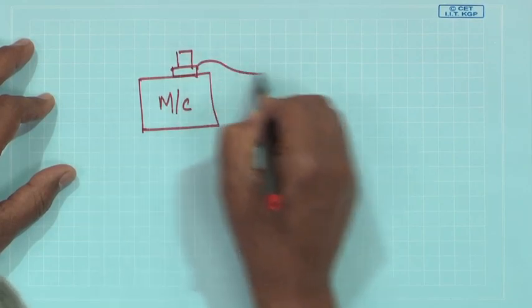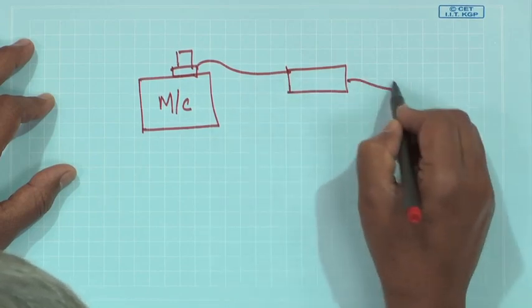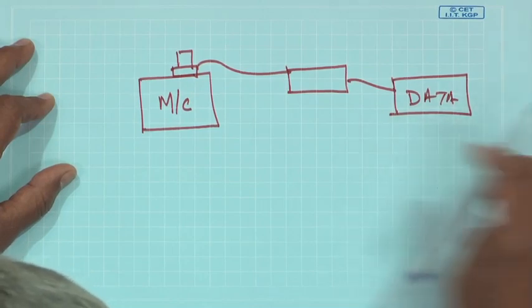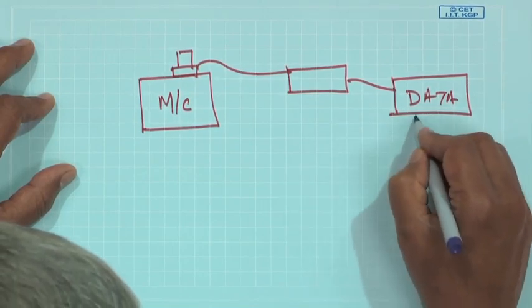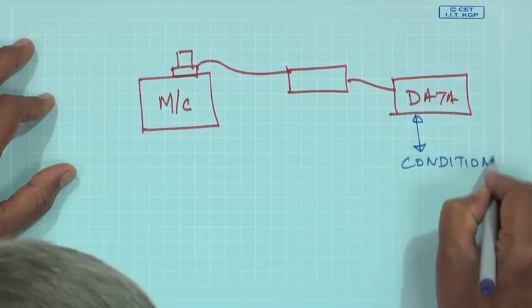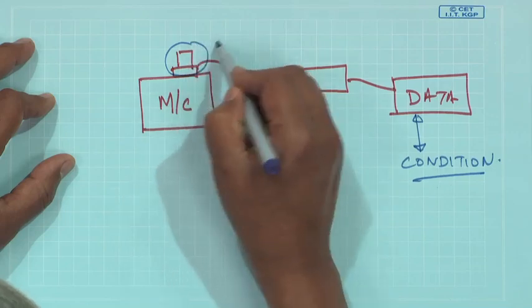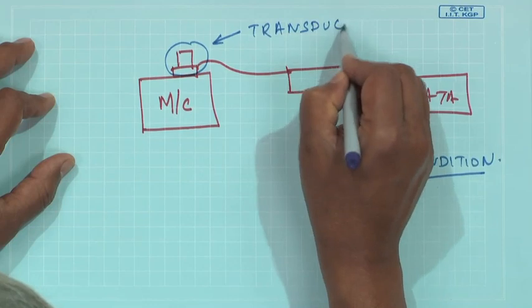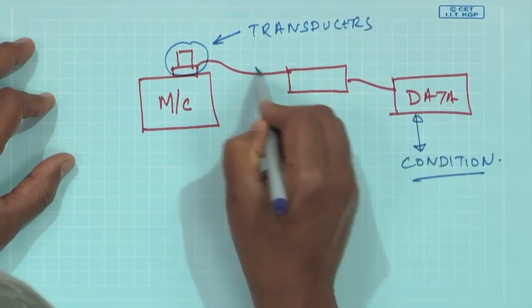In CBM I have a machine on which I put a transducer and I have a signal conditioner and then get some data. On analysis of the data I infer the machine's condition. When you are talking about transducers we will see what are the possible errors while measuring using a transducer and how we can avoid it.